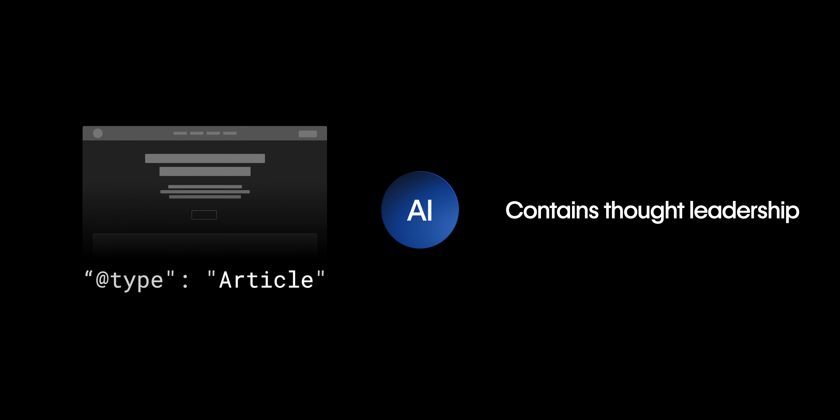For example, FAQ Schema helps AI know you're answering specific questions. Article schema helps LLMs identify thought leadership content. When fully mature, your site's technical setup makes it easy for LLMs to understand structure and meaning through auto-generated site-wide metadata.